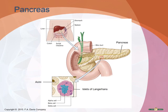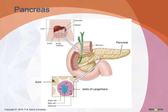Alpha cells secrete glucagon between meals when blood glucose levels drop; glucagon stimulates liver cells to convert glycogen into glucose and to convert fatty acids and amino acids into glucose, raising blood glucose levels. Beta cells secrete insulin after eating when blood glucose and amino acid levels rise; insulin stimulates cells to absorb nutrients, causing blood glucose levels to decline. Delta cells secrete somatostatin, which works within the pancreas to regulate the other endocrine cells by inhibiting the release of glucagon, insulin, and growth hormone.